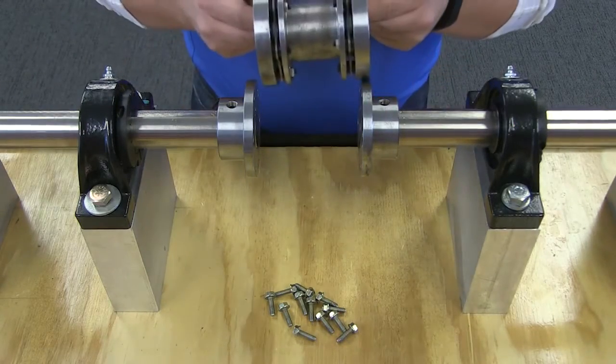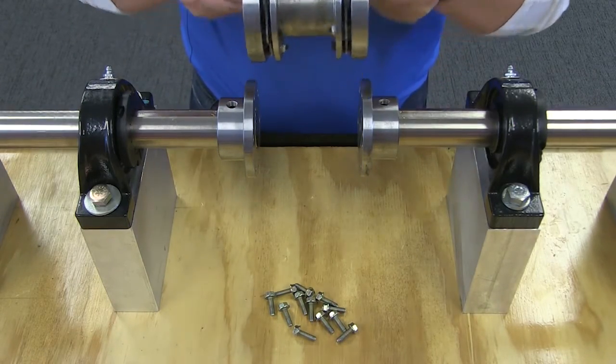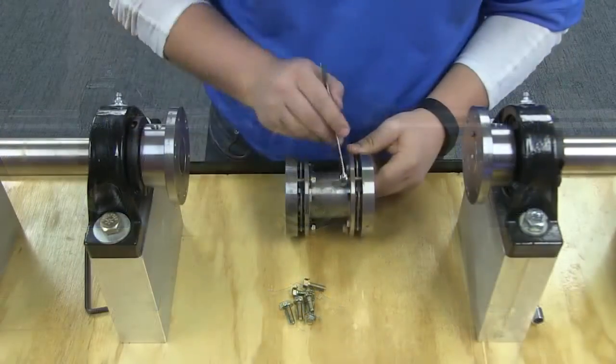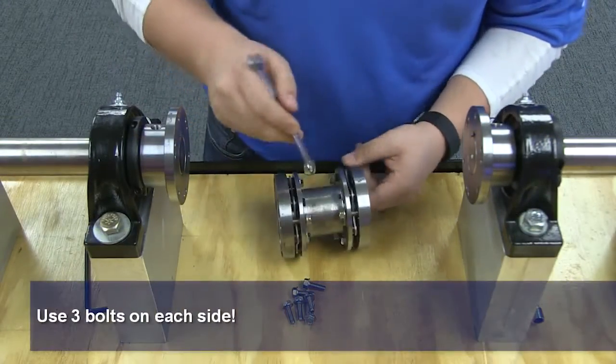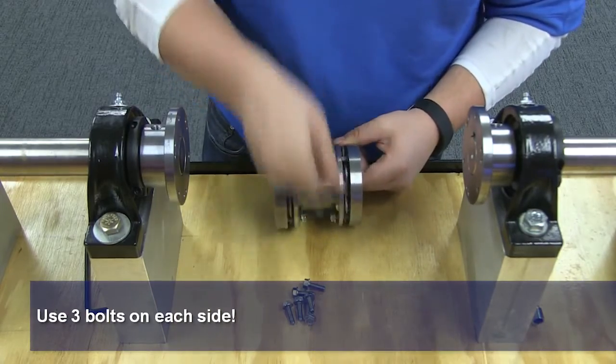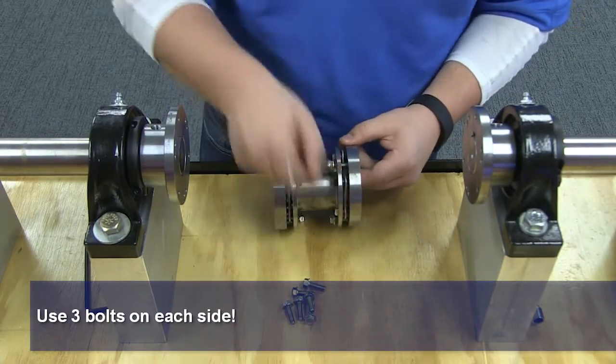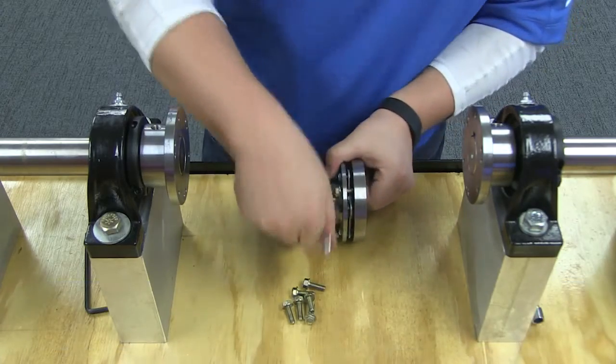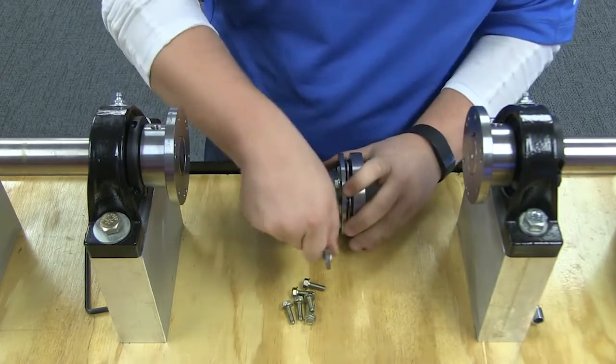For easy installation, the center member subassembly must be compressed to allow it to be slipped between the two end hubs. Use the adapter hub cap screws to compress the center member assembly by inserting them through the holes in the flanges of the center spool and threading them into the adapter tapped holes. Do not tighten more than necessary to provide clearance for the assembly.